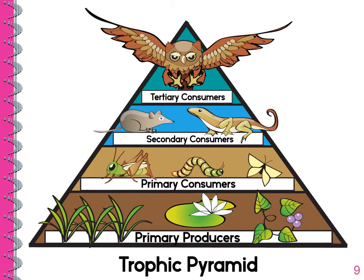Here is another example of a food chain, and we call this a trophic pyramid. It begins at the bottom with our producers, the plants. Then our primary consumers, those that eat the plant. Our secondary consumers, those who eat the primary consumers. And then at the very top, our tertiary consumers, those who eat the secondary consumers — and sometimes we call them scavengers.